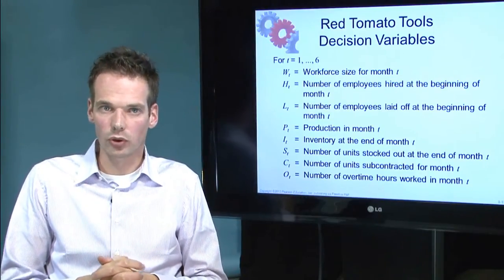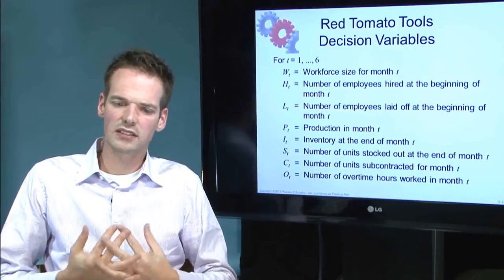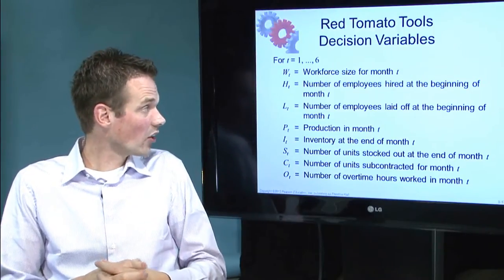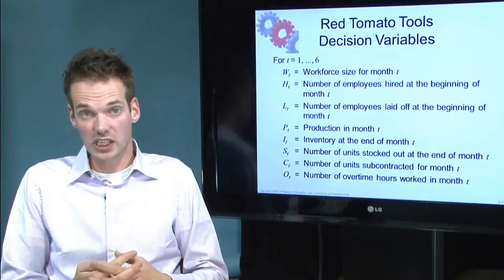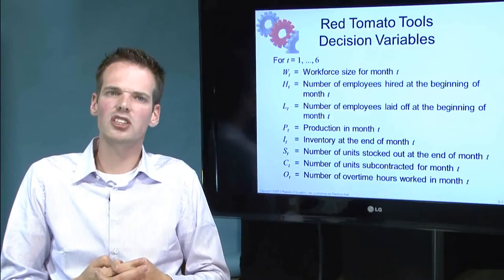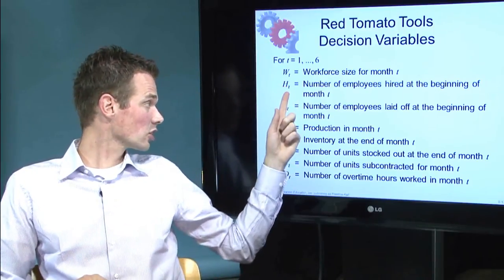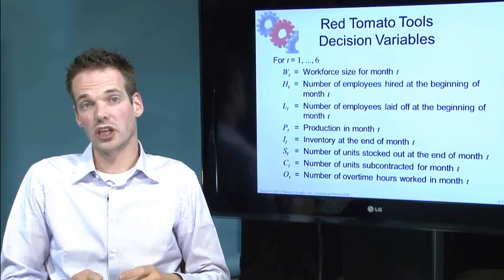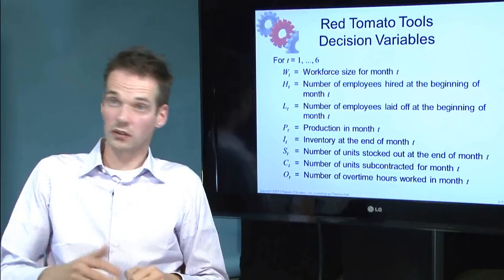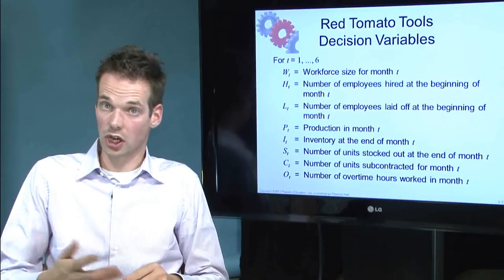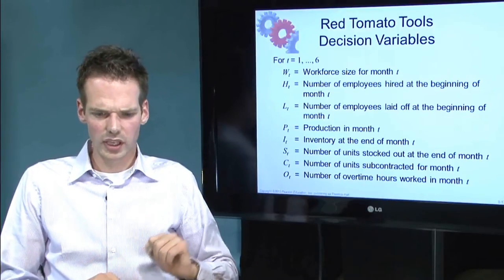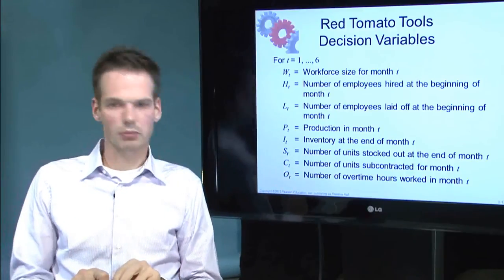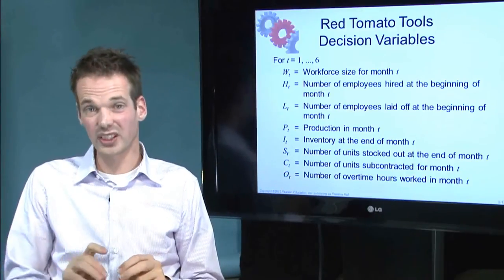These nine variables lead to eight decision variables. The eight decision variables are important to know, and they can change over time — time is denoted as small t. So you can have a labor force size that changes over time: period 1 it is 80, period 2 it is 90, period 3 it is 70. The same applies to production, inventory level, and the number of units subcontracted.